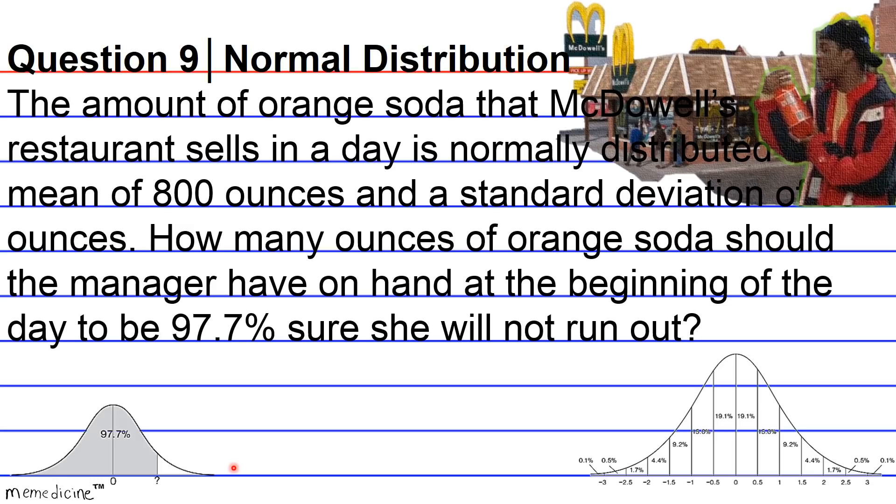And if you look at this particular scenario from the opposing perspective, the manager basically wants 100% minus 97.7%, or 2.3% probability of running out of orange soda. So she only wants there to be a 2.3% chance that she'll run out of orange soda.